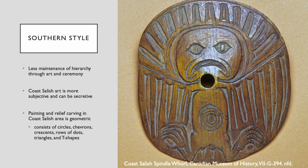North and central art styles are very concerned with social hierarchy, lineage, and status, and the crest with its strict rules of ownership. By contrast, the Coast Salish region in the south is less concerned with social hierarchy, and painting and relief carving in Coast Salish areas is more geometric, consisting of circles, chevrons, crescents, and t-shapes.